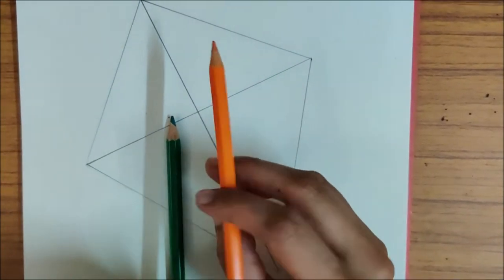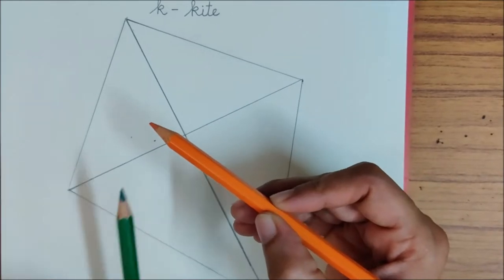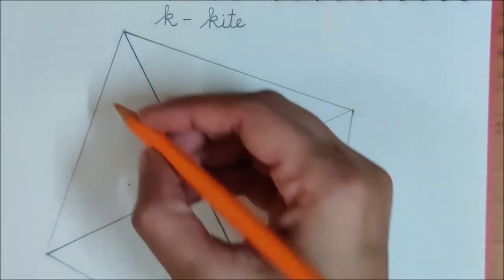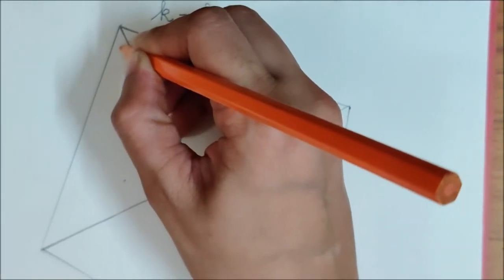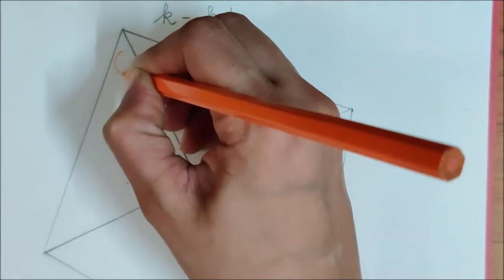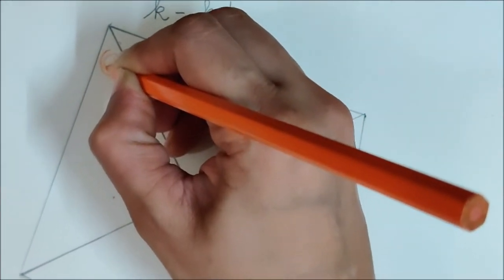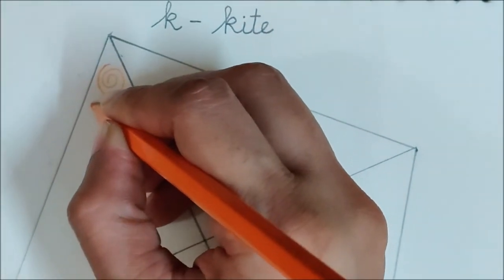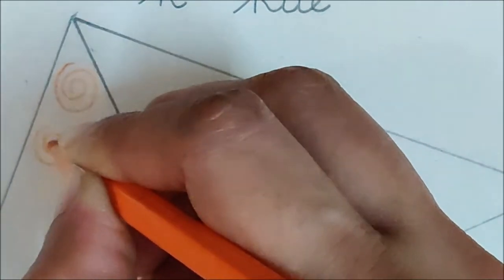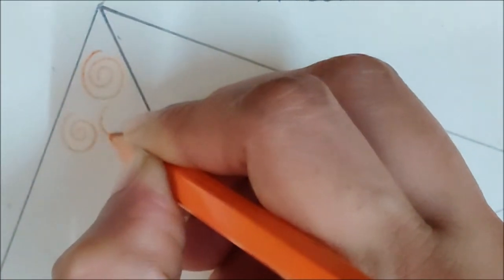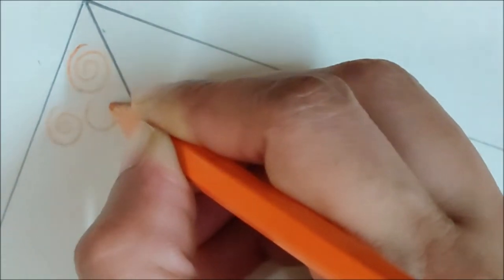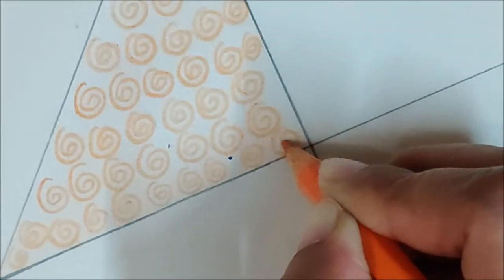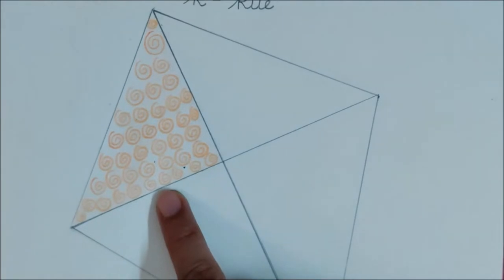So first, I will take my orange color pencil. In the first box, I will make Jalebi. How to make a Jalebi? You have to make a C first. Now turn and go inside. This is a Jalebi. So make Jalebis like this. Don't make ulta C. I am making C first and then going inside. See, I have made Jalebi pattern.